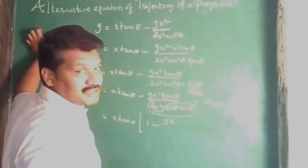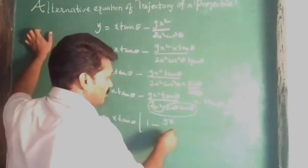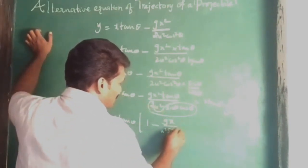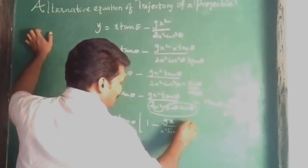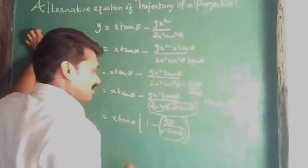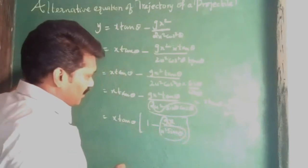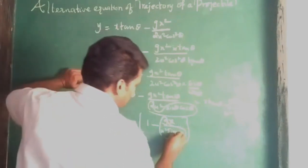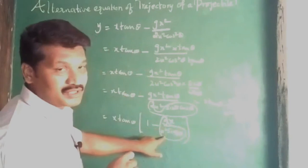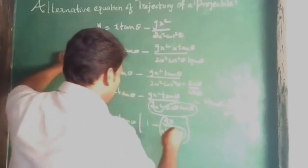The expression g·x divided by u²·sin 2θ relates to the range. The range R is equal to u²·sin 2θ by g. So g by u²·sin 2θ equals 1 by R, which is x over R.